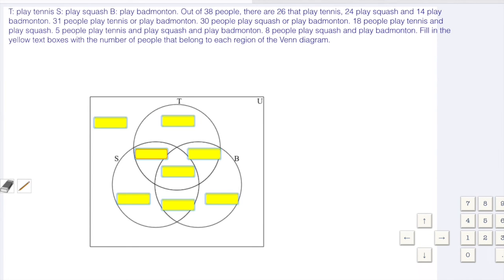Here's a level 11 type question. T is plays tennis, S is plays squash, B is plays badminton. Out of 38 people, there are 26 that play tennis, 24 that play squash, and 14 that play badminton.